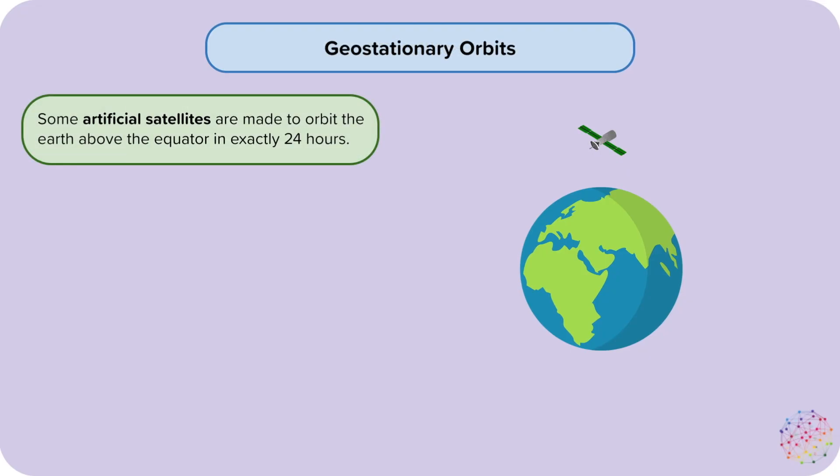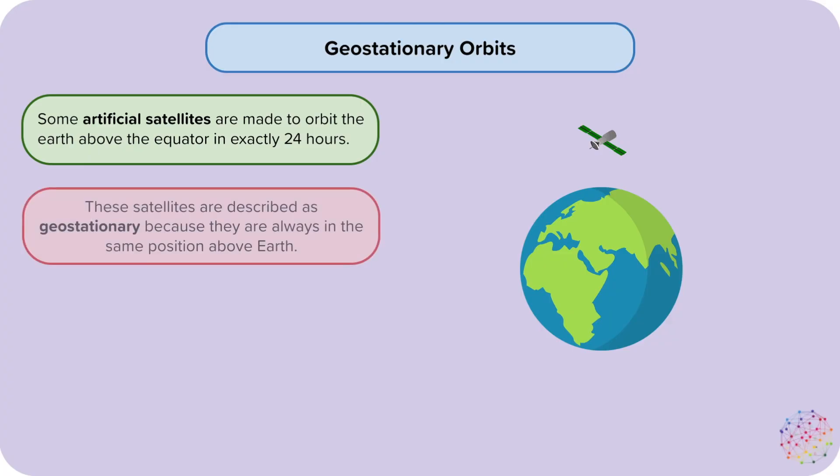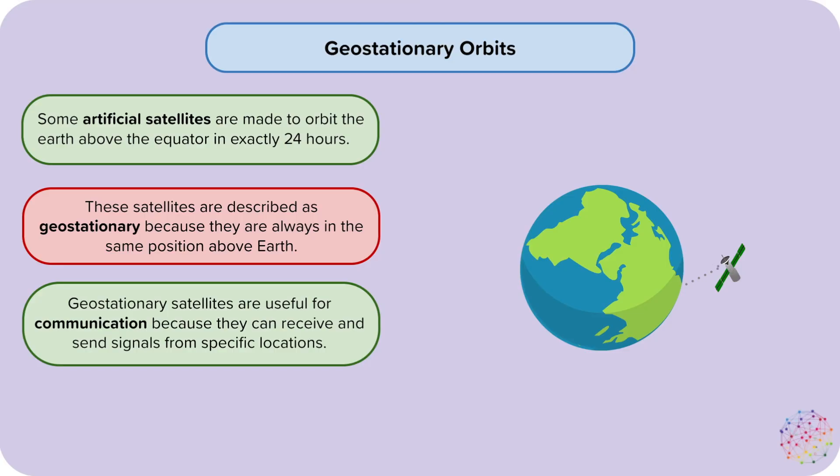Some artificial satellites are made to orbit the Earth above the equator in exactly 24 hours. These satellites are described as geostationary because they are always in the same position above the Earth. Geostationary satellites are useful for communication because they can receive and send signals from specific locations.